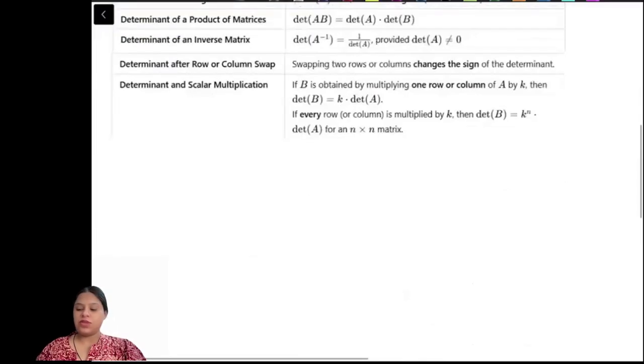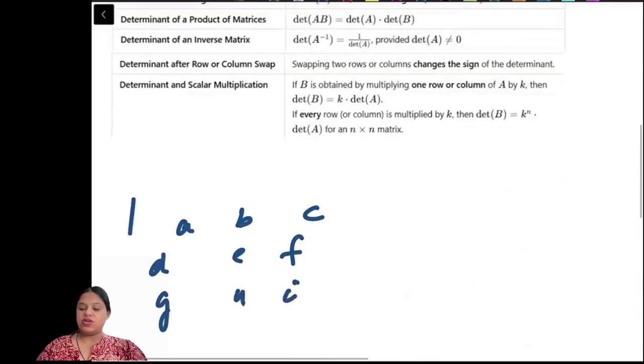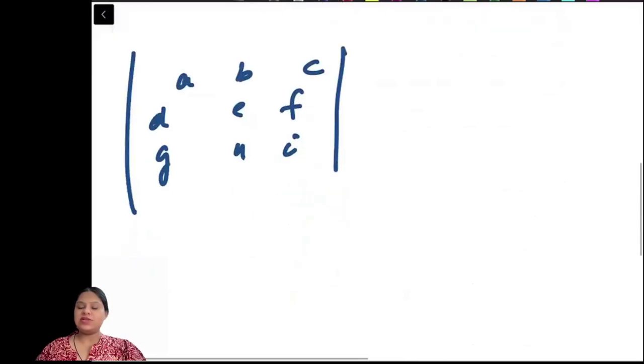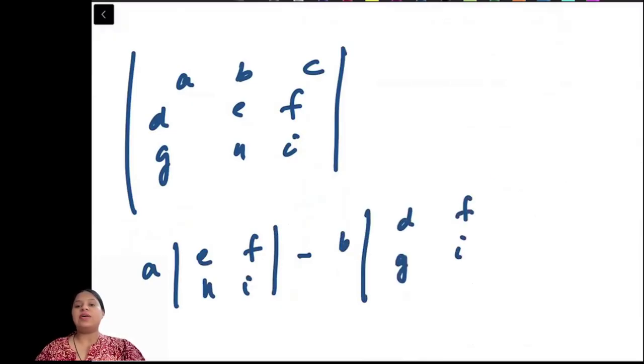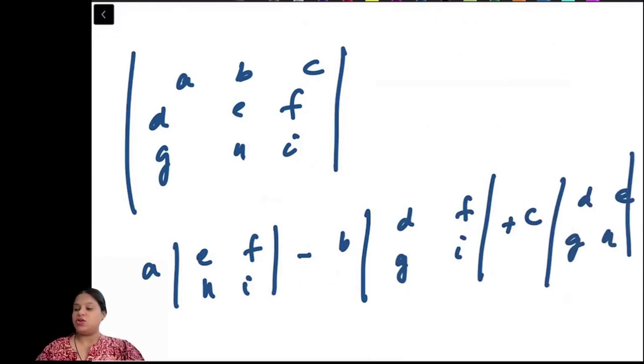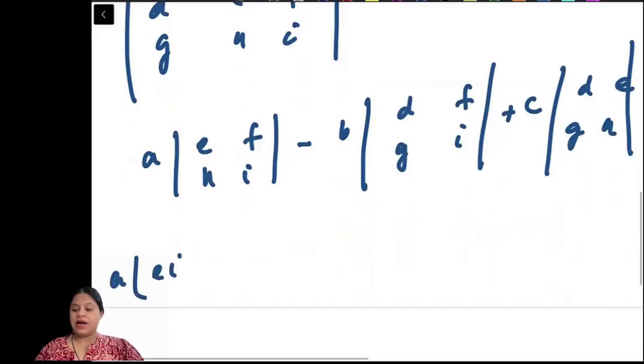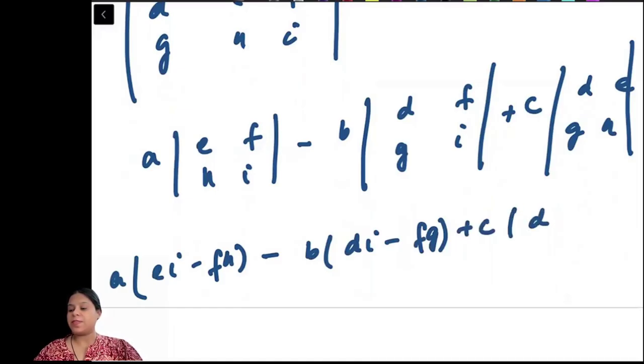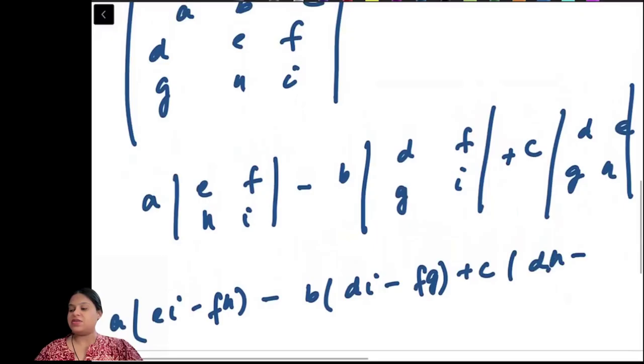If it's a 3 by 3 matrix, ABCDEFGHI, the determinant will be A times determinant of EFHI minus B times determinant of DGFI plus C times determinant of DEGH. So it will be A times EI minus FH, minus B times DI minus FG, plus C times DH minus EG.